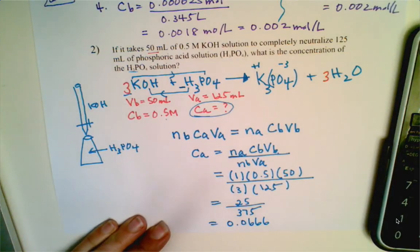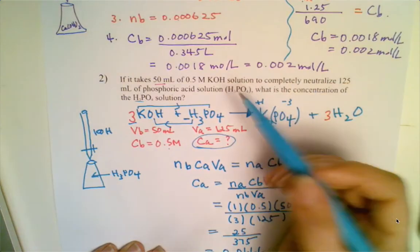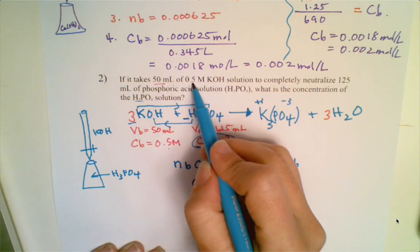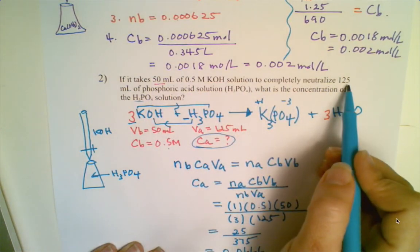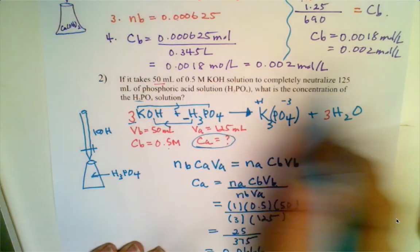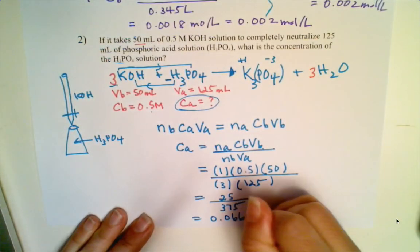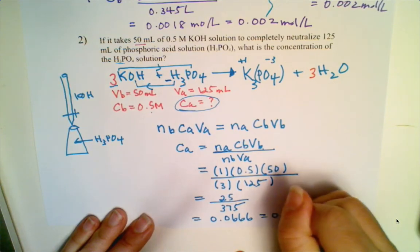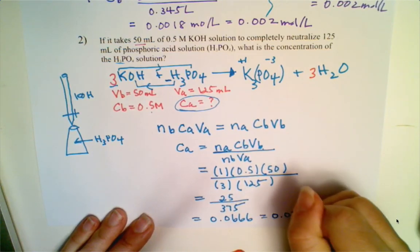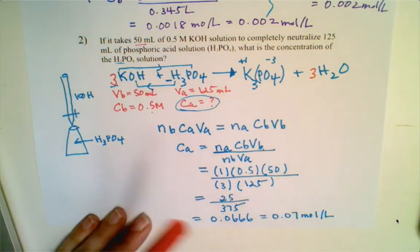Checking significant figures: 0.5 has 1 sig fig, 50 has 1 sig fig, and 125 has 3 sig figs. So I can only report to 1 significant figure. The appropriate answer is 0.07 mol/L.